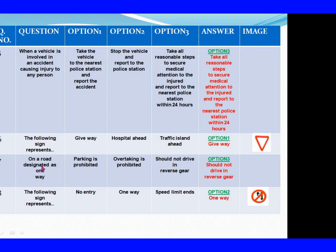Question 7: On a road designated as one way. Option 1: Parking is prohibited. Option 2: Overtaking is prohibited. Option 3: Should not drive in reverse gear. The right answer is Option 3: Should not drive in reverse gear. Question 8: The following sign represents. Option 1: No entry. Option 2: One way. Option 3: Speed limit ends. The right answer is Option 2: One way.